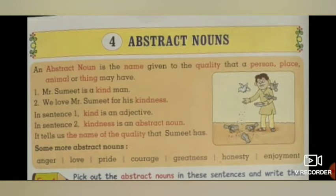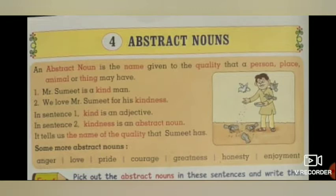An abstract noun is the name given to the quality that a person, place, animal or thing may have.